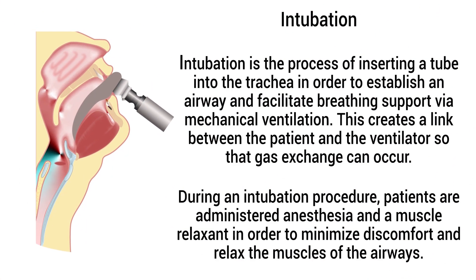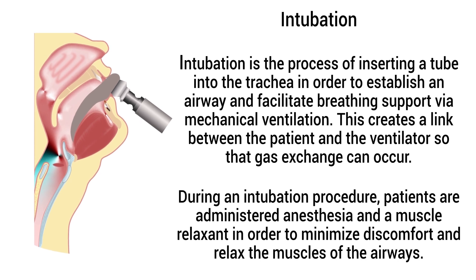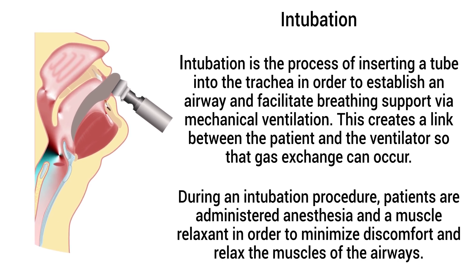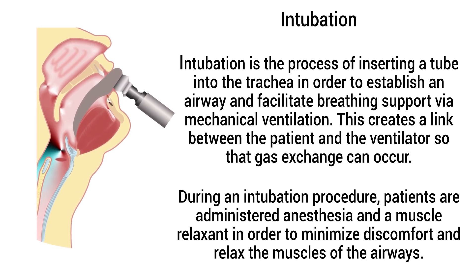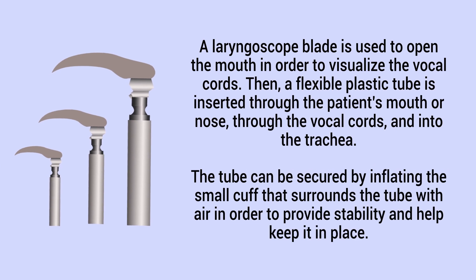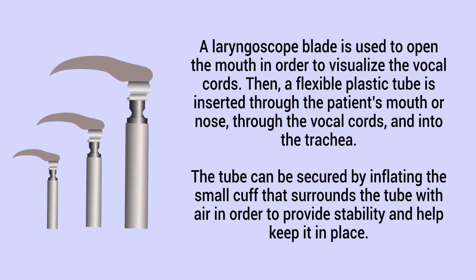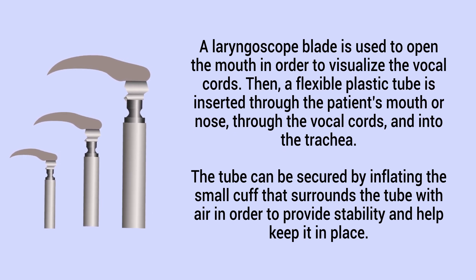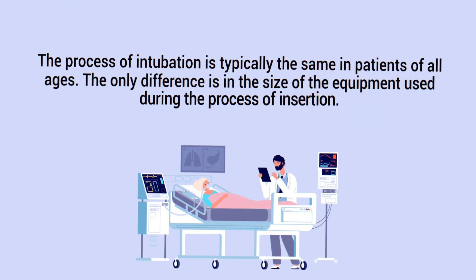Intubation is the process of inserting a tube into the trachea in order to establish an airway and facilitate breathing support via mechanical ventilation. During an intubation procedure, patients are administered anesthesia and a muscle relaxant to minimize discomfort and relax the muscles of the airways. A laryngoscope blade is used to open the mouth and visualize the vocal cords, then a flexible plastic tube is inserted through the patient's mouth or nose, through the vocal cords, and into the trachea. The tube can be secured by inflating a small cuff surrounding the tube with air.